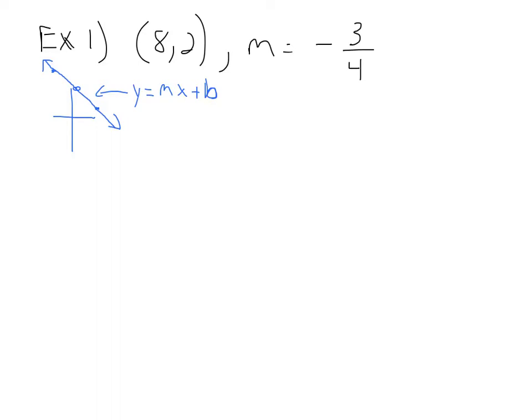So the very first thing we're going to do is label what's given to us. The eight is the x of the ordered pair. The two is the y of the ordered pair. And m is already given. We need to write the equation of a line — we need m and b. We're given m, so we just have to figure out what b is, the y-intercept.